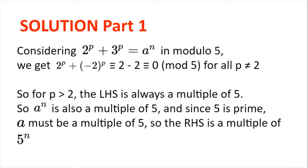Considering 2 to the power of p plus 3 to the power of p equal to a to the power of n in modulo 5, we get 2 to the power of p plus minus 2 to the power of p, which for all p not equal to 2 is congruent to 2 minus 2, which is 0 modulo 5. This is because all primes apart from 2 are odd, so minus 2 to the power of p will be negative for all primes apart from 2. So for p greater than 2, the left-hand side is always a multiple of 5.